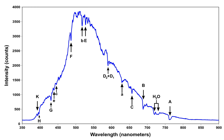Spectral lines are the result of interaction between a quantum system — usually atoms, but sometimes molecules or atomic nuclei — and a single photon. When a photon has about the right amount of energy to allow a change in the energy state of the system, the photon is absorbed.